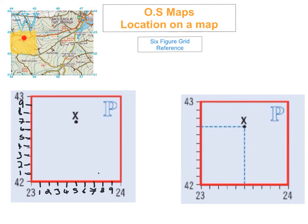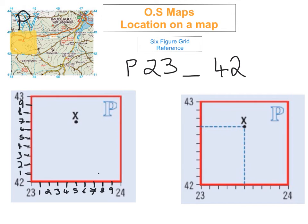Going back to our question — whereabouts is the caravan on the OS map? The first thing we're going to do is our four-figure grid reference. The subzone is P. We go along the corridor and get our easting number, which is 23, and then up the stairs for the northing, which is 42. So far we've got P, 23, space — we don't know that third digit yet — then 42, space — and we don't know that sixth digit yet either.